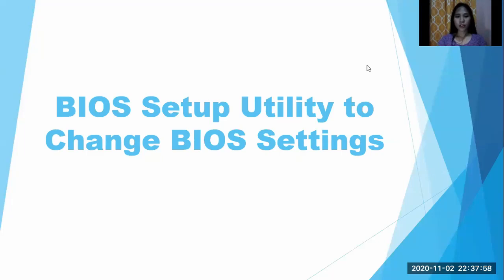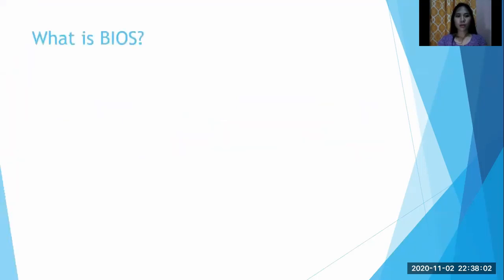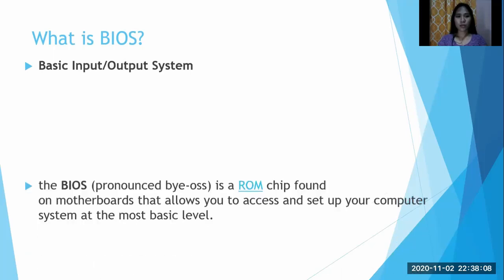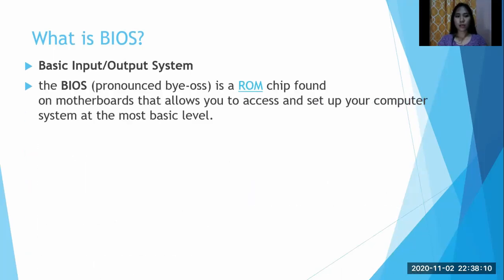The BIOS Setup Utility is used to change BIOS settings. First, what is BIOS? BIOS means the Basic Input-Output System. The BIOS, pronounced as BIOS, is a ROM chip found on motherboards that allows you to access and set up your computer system at the most basic level.